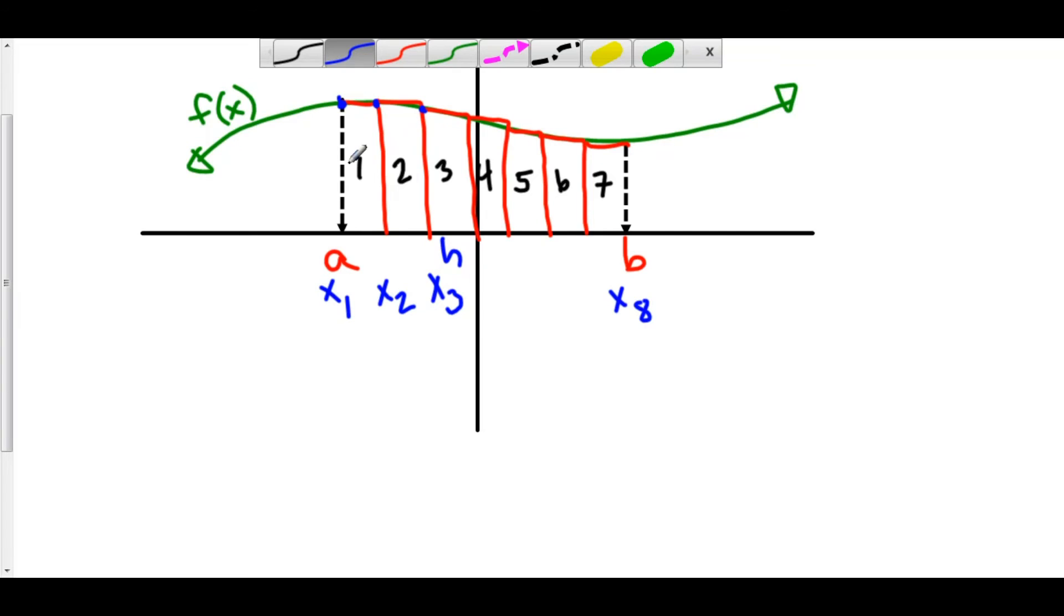And the height of rectangle 1 is the function value on the left-hand side of that rectangle. And on the left-hand side, we used x sub 1. So this right here is f of x sub 1.